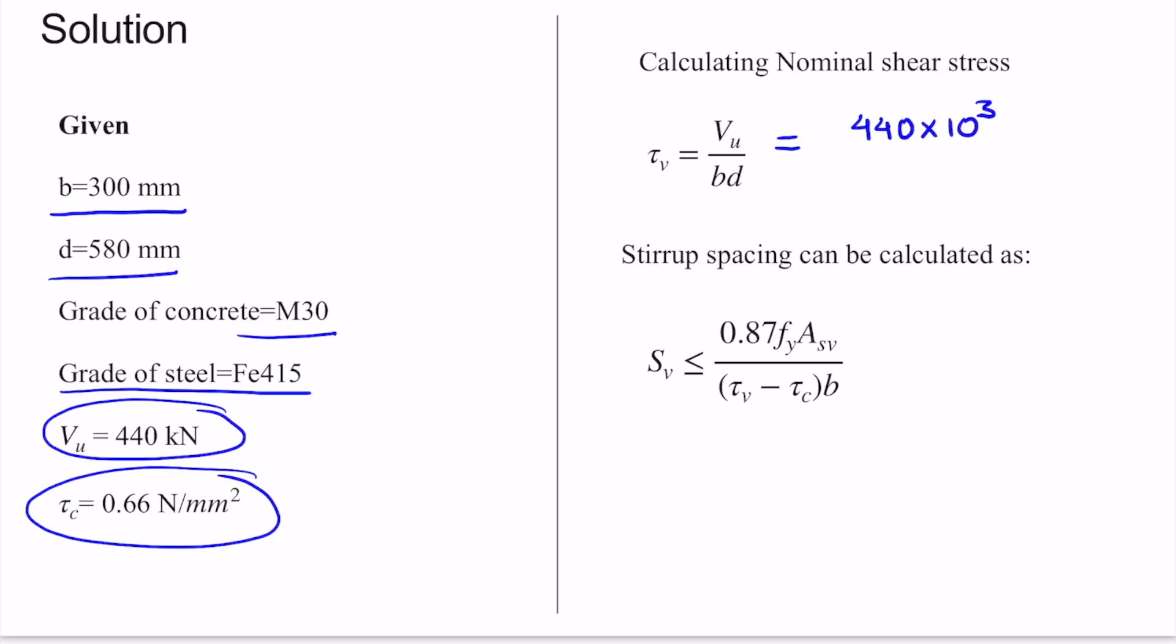The value of V_u in Newton is 440 × 10³ divided by effective depth d and width b. The width b is 300 mm and effective depth d is 580 mm. From this we get the value of τ_v as 2.529 N/mm².